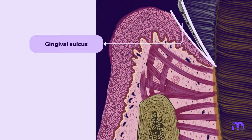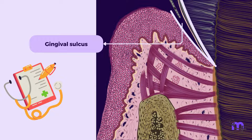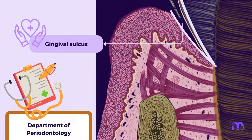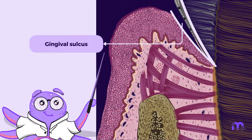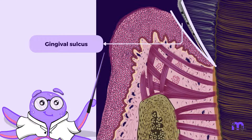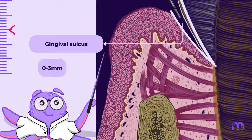The depth of the GENGIVAL SULCUS is a significant diagnostic parameter and is an indicator of periodontal health. Hence, this is a fundamental concept in periodontology. The depth of a GENGIVAL SULCUS measures 0 or close to 0 mm under perfectly normal or optimal circumstances. However, a sulcus depth of up to 3 mm is considered normal.